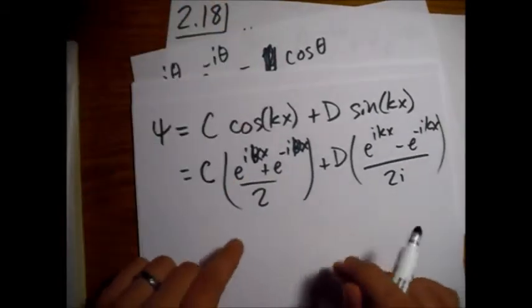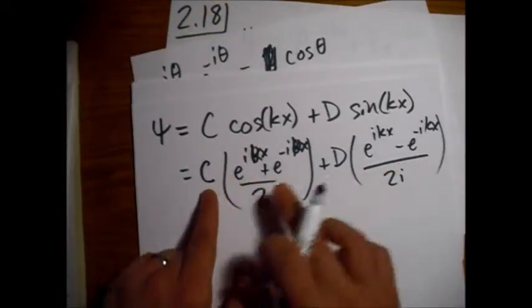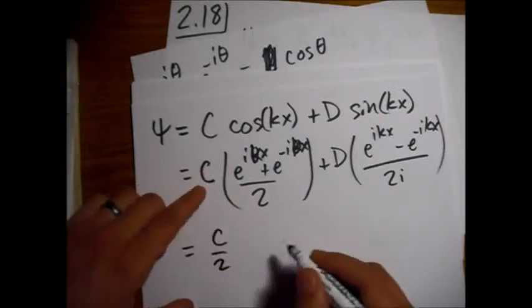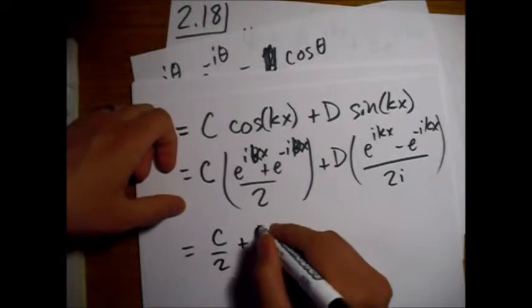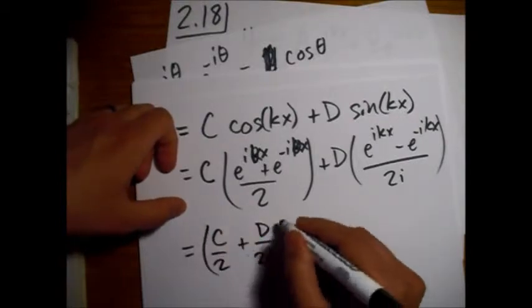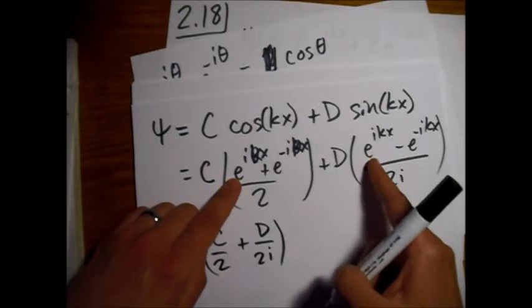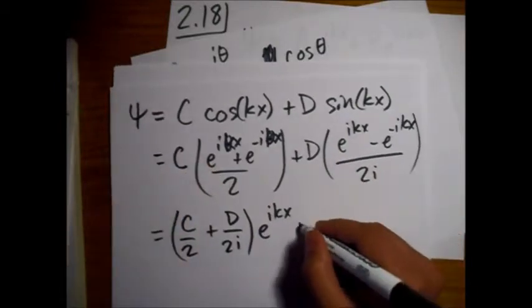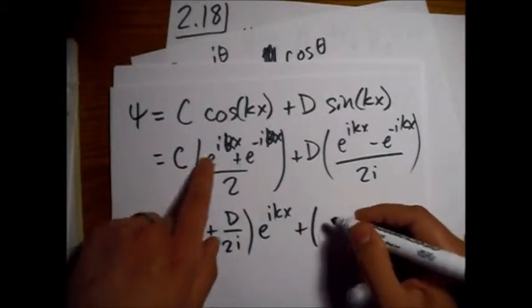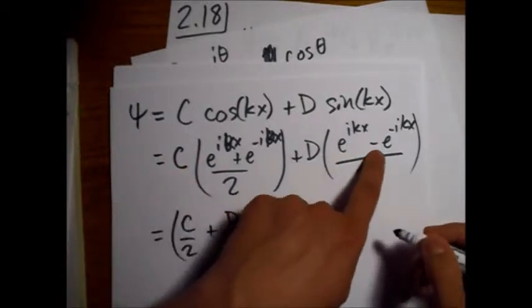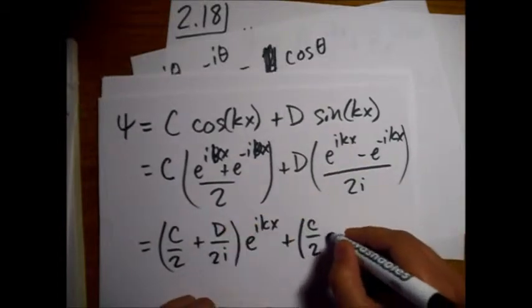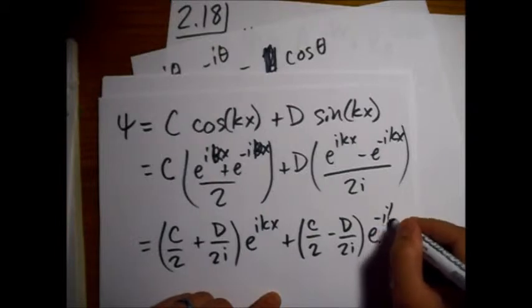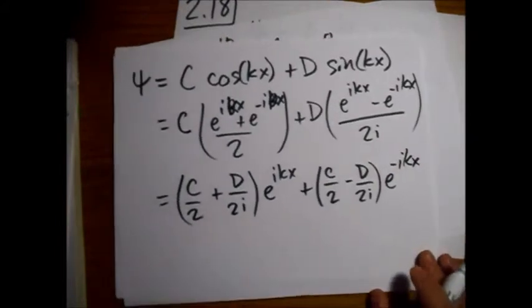Now, when we just kind of gather the terms here, we have C over two plus D over two i. And that's for this e to the ikx part. And then, we'll have C over two minus, because of the minus sign right here, minus D over two i, times e to the minus ikx.